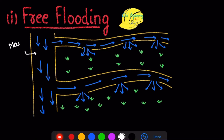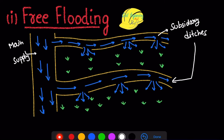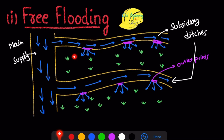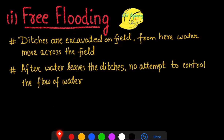To recap: this is our main supply line where the water flows. From it come our subsidiary ditches that carry the water towards the field. These subsidiary ditches have outlet points that deliver the water to the field, flooding it. The water surges across the entire field, and little to no attempt is made to control the quantity of water.